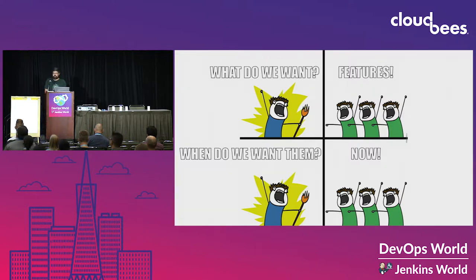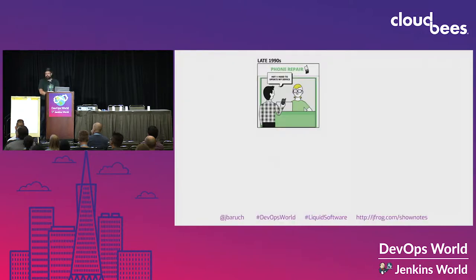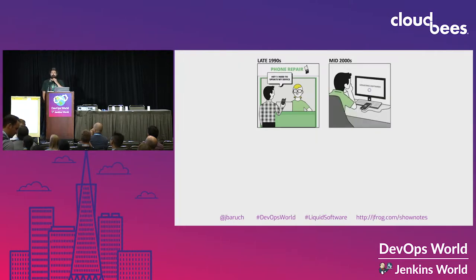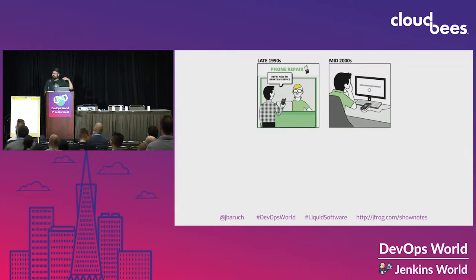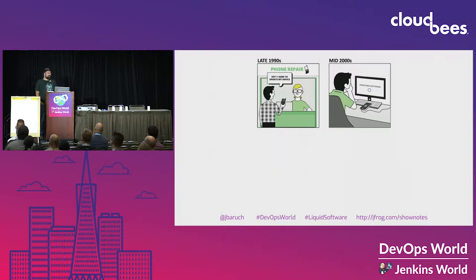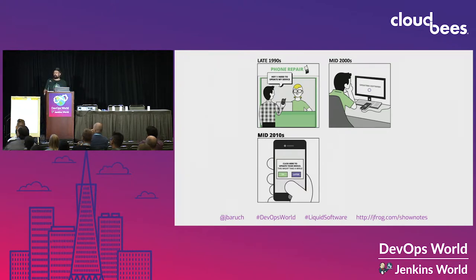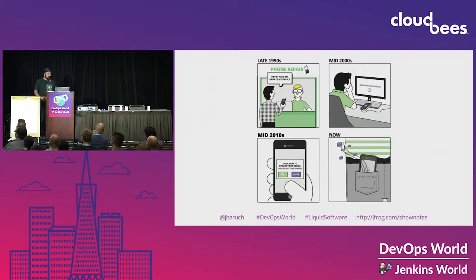The reason why we upgrade our phones every couple of years is because they have new features. Back in the Nokia era, if you wanted an upgraded version of Snake, you had to buy a new phone. Some geeks used a data cable to export contacts, but that was about it. Then things changed - we got smartphones with a proper operating system, proper software, proper apps. And we started updating them. Now they kind of update by themselves, so we get features faster.